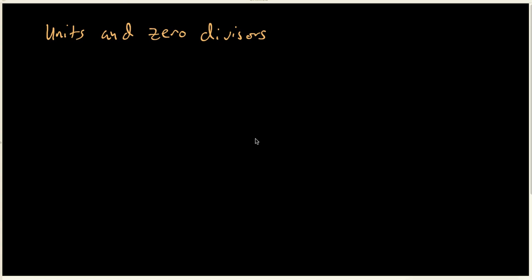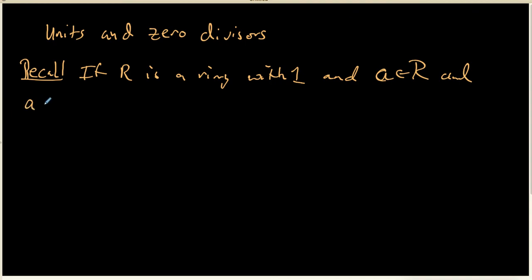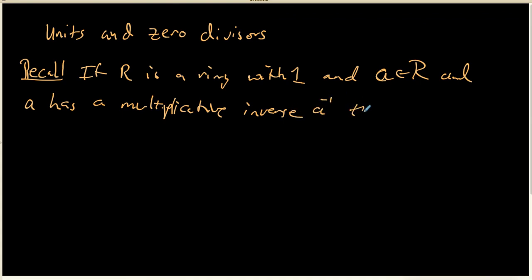In this recording, we're going to explore a little bit more about units and zero divisors. The first thing I want to do is recall the two basic definitions. If we have a ring with an identity element and we pick any element A inside this ring, and A has a multiplicative inverse — usually denoted A inverse — then we call A a unit inside the ring R. So units are simply the elements that have multiplicative inverses.